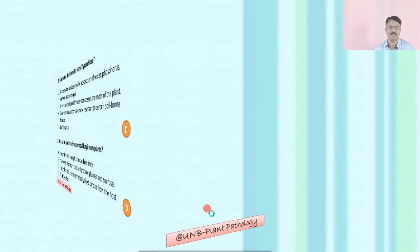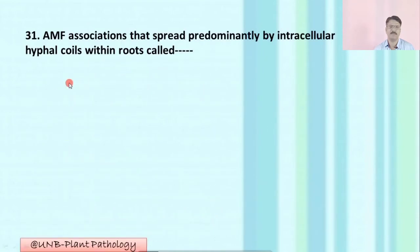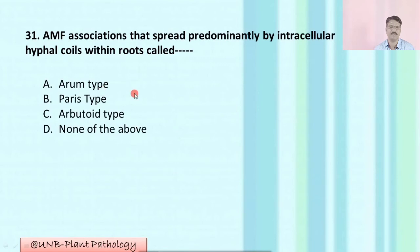Question number thirty-one: AMF associations that spread predominantly by intracellular hyphal coils within roots are called — A: Arum type; B: Paris type; C: arbitrary type; D: none of the above. The correct option is B: Paris type.